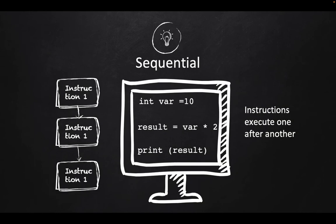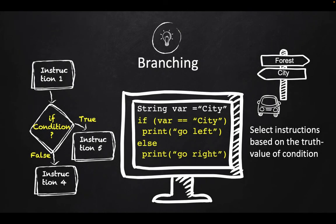The first one is sequential control structure, which means each of the instructions in a program will execute one after another. The second one is a branch control structure. In branch control structure, there is basically a condition, and if the condition is true, some specific instructions in the program will be executed.